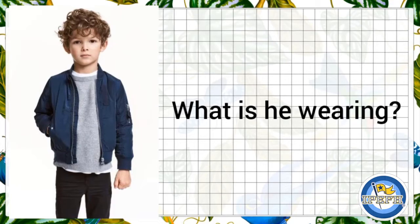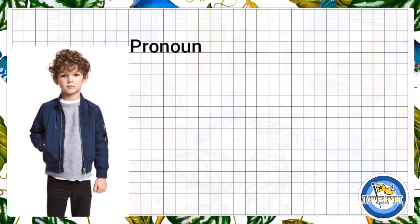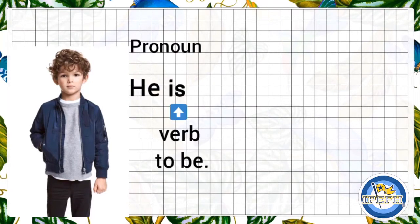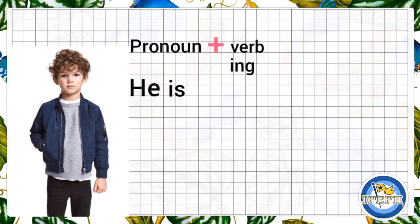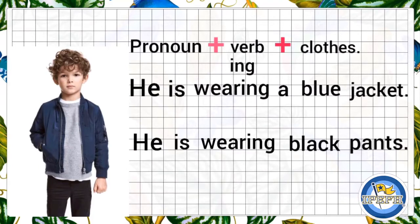So the sentence is like this. First, the pronoun, and it is he. Then is the verb to be, and it is is. Then is the verb in present progressive, and the verb is wearing. And finally, describe the cloth — color of the cloth and which cloth it is. So the sentence is: he is wearing a blue jacket. Let's practice and describe his pants. He is wearing black pants.